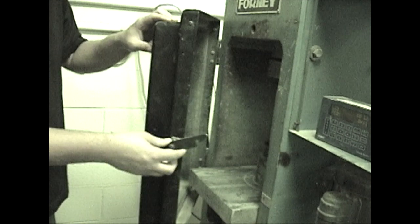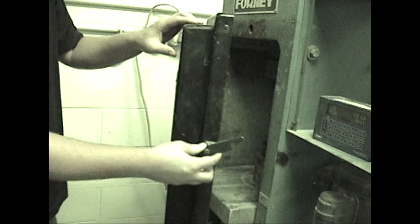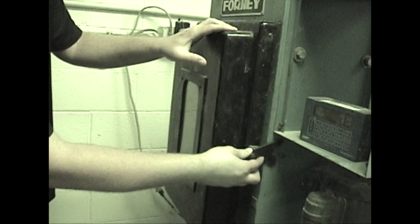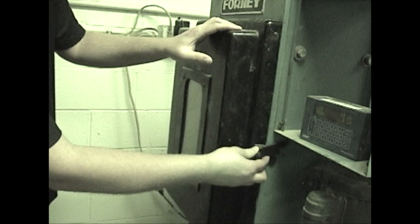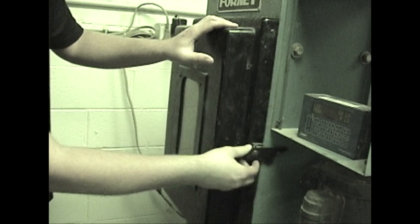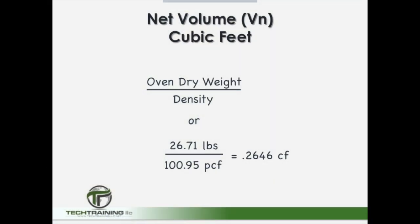We now want to move on to calculating our compressive strength. However, before we can do that, we must first calculate the net area of our unit in square inches, and in order to calculate the net area we must first calculate the net volume in cubic feet. To calculate the net volume VN, we simply take the oven dry weight and divide it by the density of the unit: 26.71 pounds divided by 100.95 pounds per cubic foot, leaving us with a net volume of 0.2646 cubic feet.